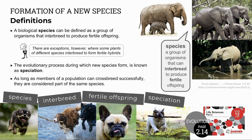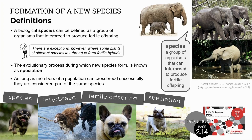A species is a group of organisms that can interbreed to produce fertile offspring. For example, an Indian elephant cannot interbreed with an African bush elephant, which cannot interbreed with an African forest elephant, as they are three separate species. Species is a man-made definition, however, so it doesn't always work out exactly as defined. As long as organisms can interbreed to produce fertile offspring, they are considered members of the same species.